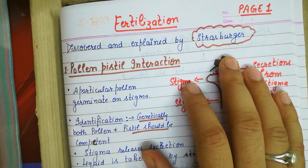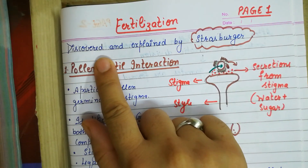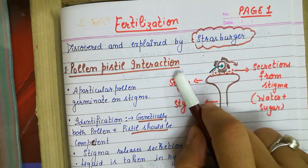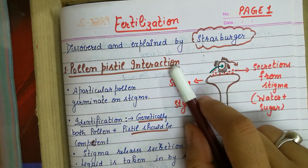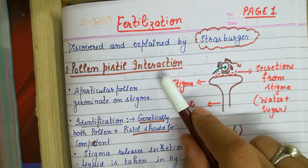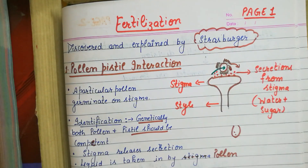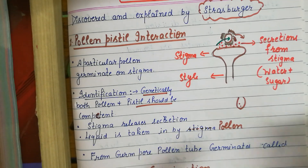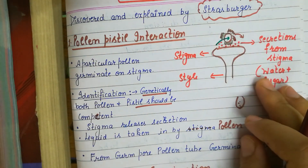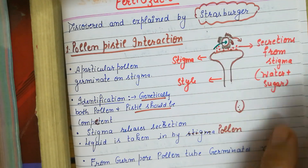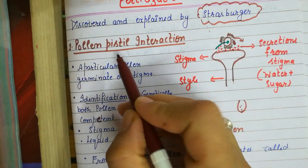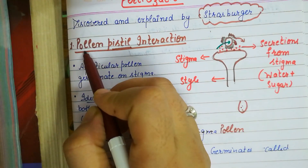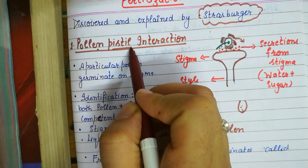Fertilization was discovered and explained by scientist Strasburger. The first step in fertilization is interaction. As you know, ovules are present inside the ovary, and it is not the ovules which directly interact with pollen — it is the pistil which interacts with the pollen. That is why the first step is pollen-pistil interaction.